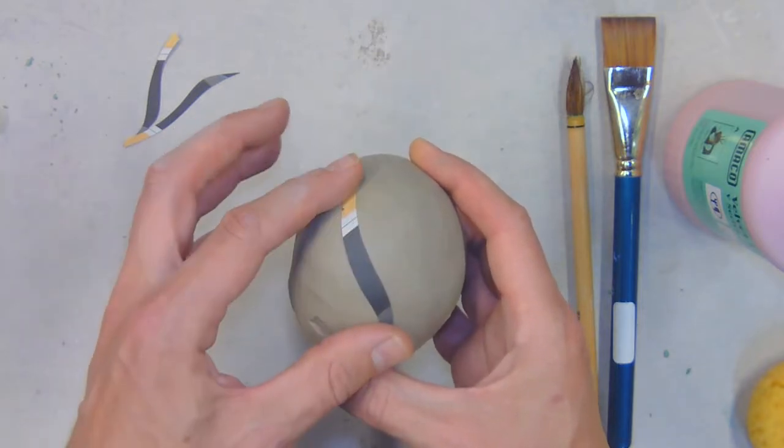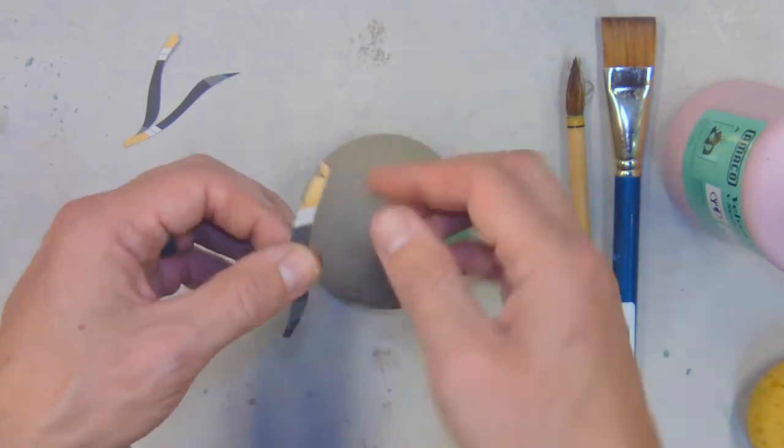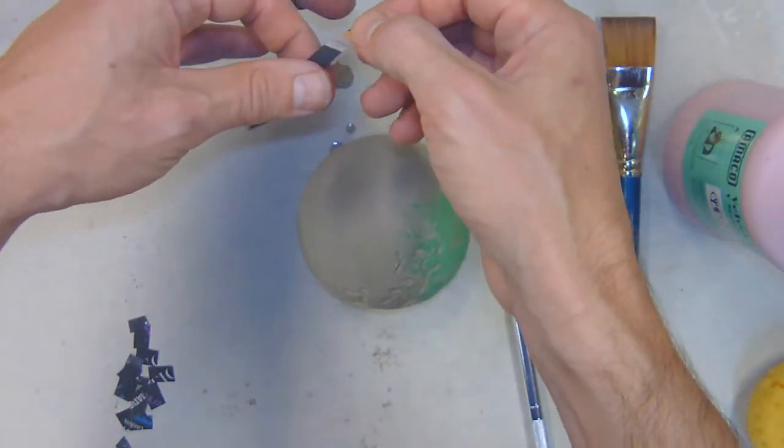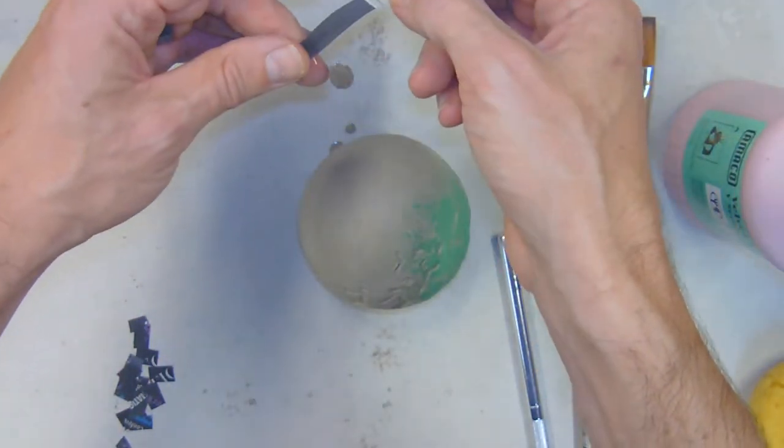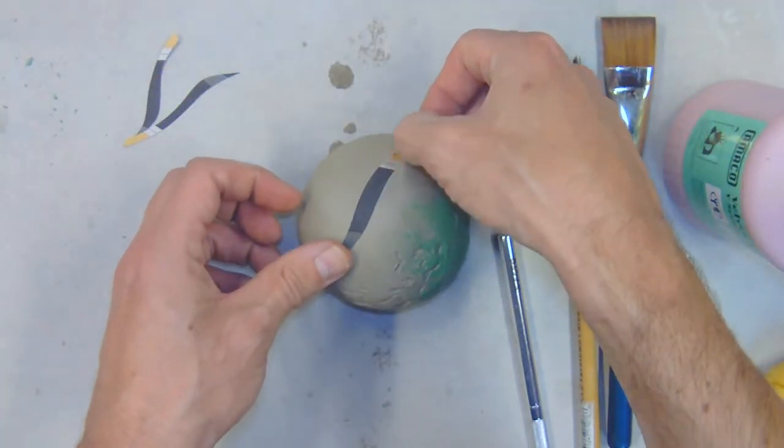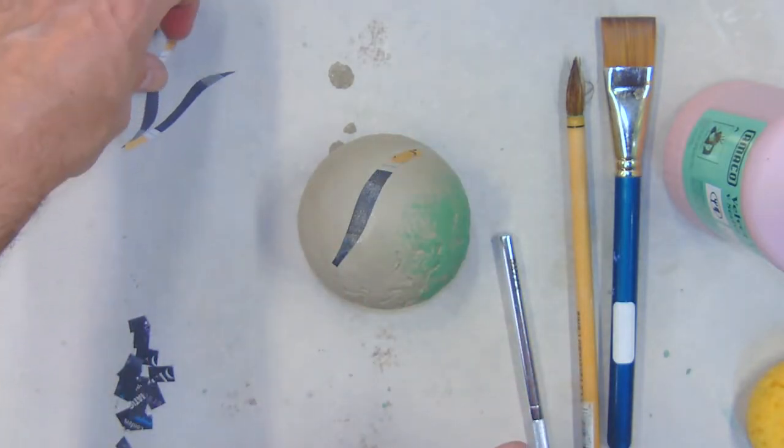First, to get them to stick, I have to get the pieces of paper wet. So I'm just going to very lightly dip them in water and I'm going to pull any excess water off, and then once the newspaper is wet it will lay down flat against the clay.